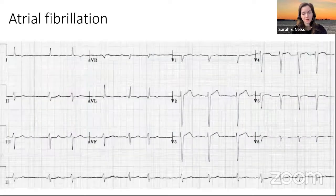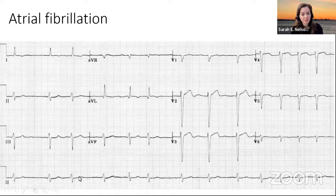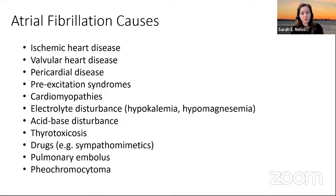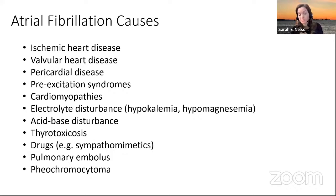In this rhythm strip, particularly looking at lead II at the bottom, you see the variable ventricular rate with QRS complexes occurring at different times, and you fail to pick up any P waves. That's your sign that it's likely atrial fibrillation. A lot of our patients already have it — we see many vascular cases and stroke patients where we identify AFib as likely the cause of their large vessel occlusion.